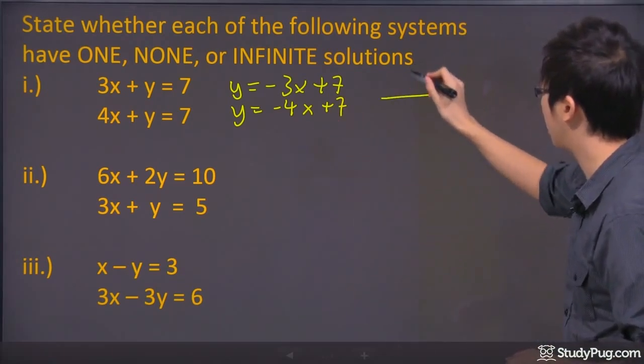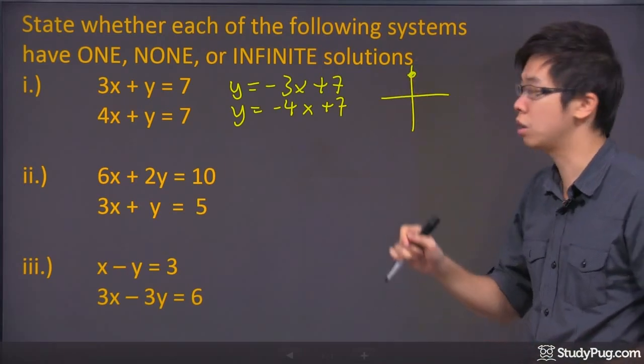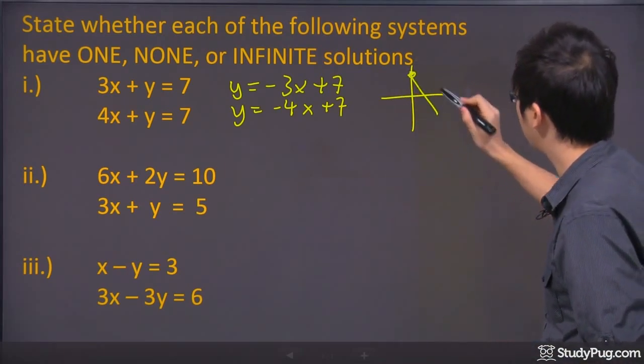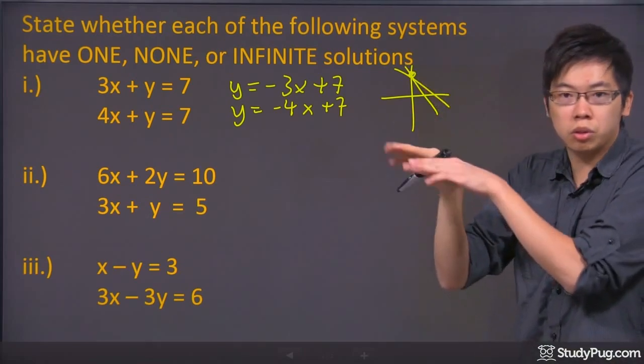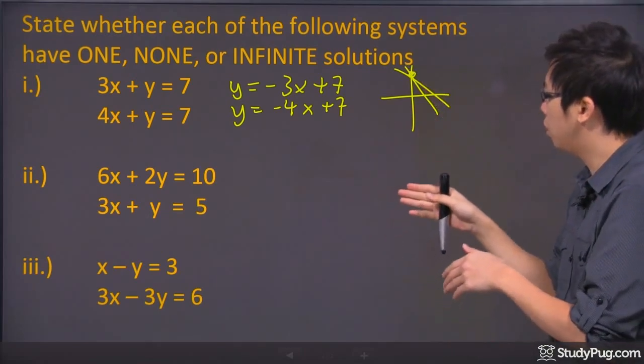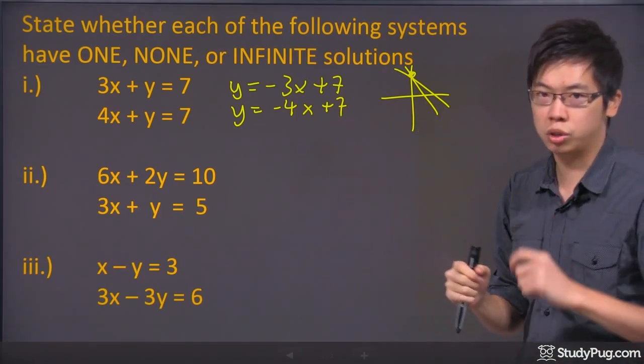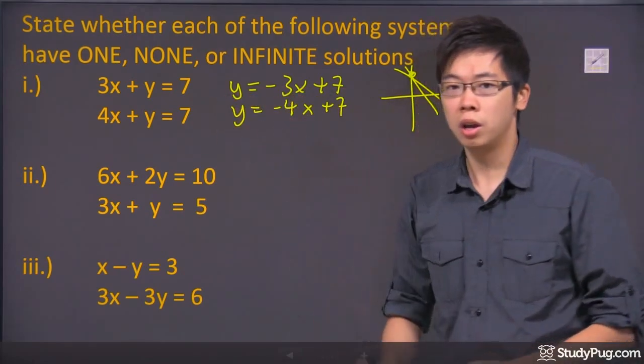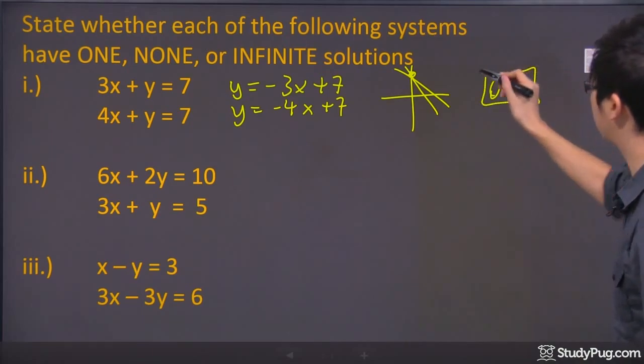Because if you go ahead and graph it on the side, it both starts at y equals 7. For example, that's 7 right there. One of them goes this direction, the other one goes like this direction. So their slope is slightly different. But even though the intercept is the same y-intercept, they're only touching each other just one time. So for this one, it only has just one solution. That's the answer for the first system.